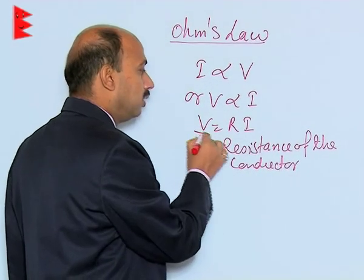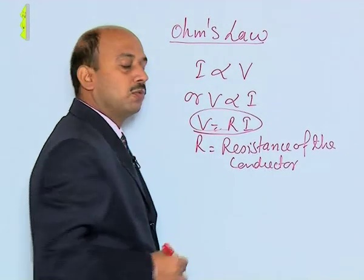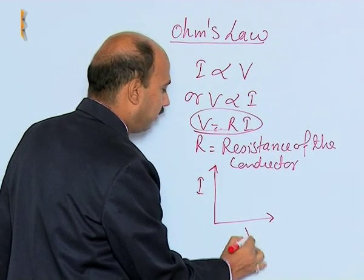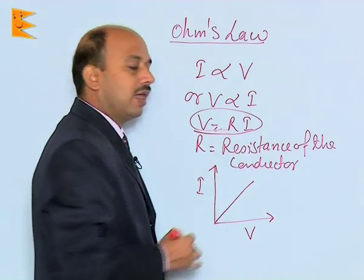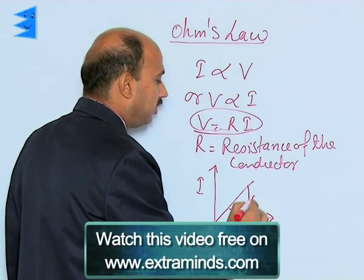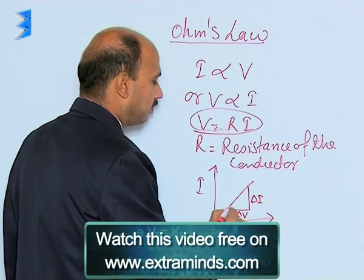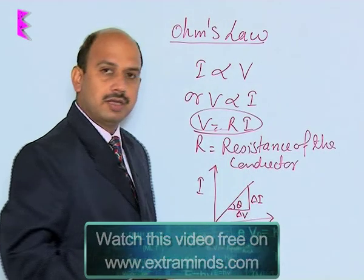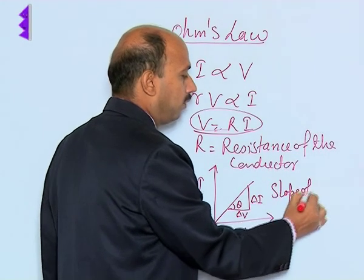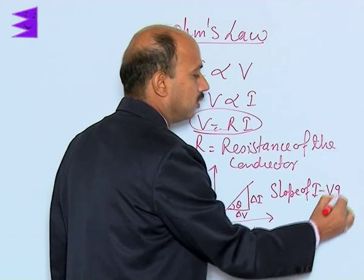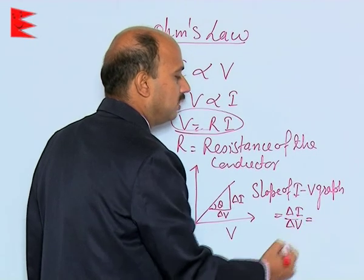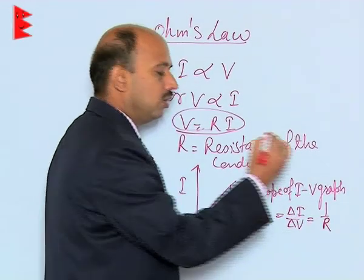Now we can discuss the relation V is proportional to I and draw its I-V graph. Taking I on the x-axis and V on the y-axis, the graph is a straight line. We can calculate its slope: slope of the I-V graph equals delta I upon delta V, which is equal to 1 upon R.